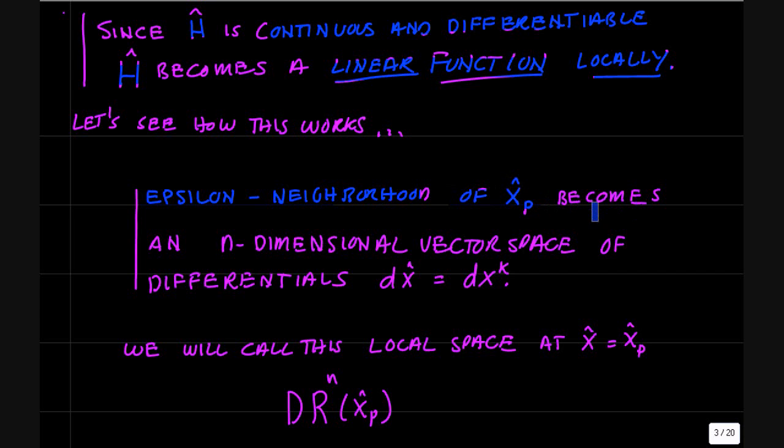So an epsilon neighborhood of a point x_p becomes an n-dimensional vector space of differentials dx with components dx^i. We will call this local vector space at the point x_p, DR^n at x_p. So if you're thinking of R^n as a manifold, then this local linear space of differentials would be called the tangent space of the manifold R^n at the point x_p. We have this differential structure in R^n, and locally there are linear spaces of differentials.